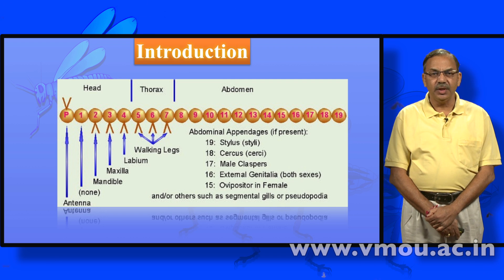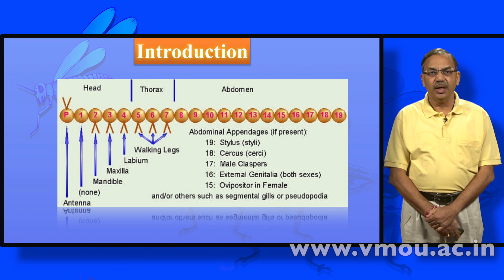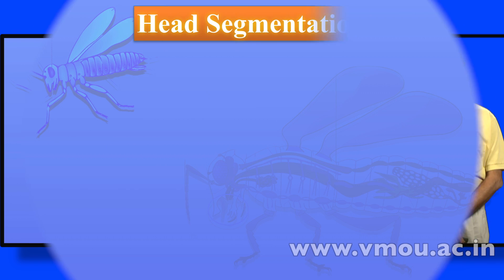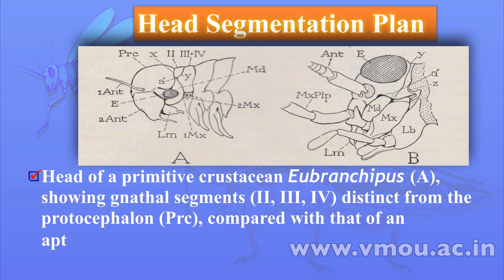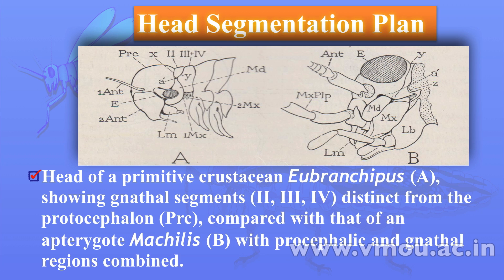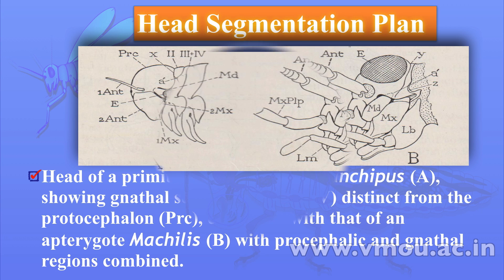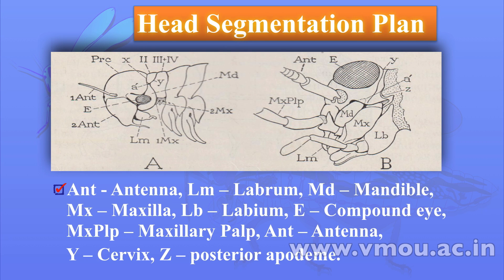The first is the antenna — no doubt developed. However, the second is the clear-cut antenna segment and the first is the pre-antenna segment. This diagram shows the head segmentation plan, taking it from the crustacean Eubranchipus up to the apterygote Machilis in diagram B. One can understand that the protocephalon has got first and second antenna segments, followed by the labrum, then the mandible, then maxillipedes first, second, third, fourth, and later the thoracic segments.